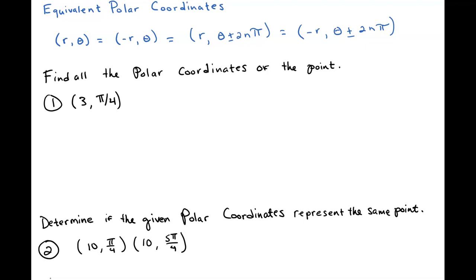Then, of course, you have (-r, θ ± 2nπ). So there's really so many different ways to represent polar coordinates. There's not just one way. Whereas Cartesian, you had an (x,y). In this case, (r, θ), there's different ways to model it.